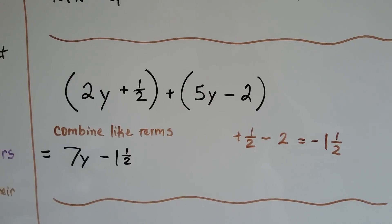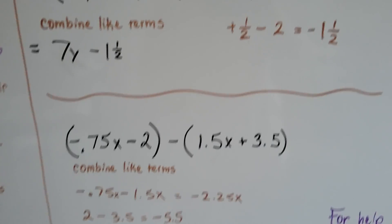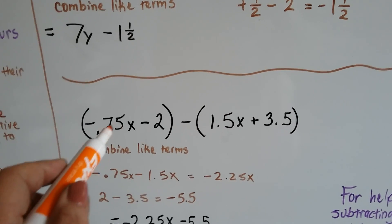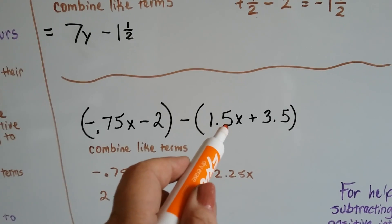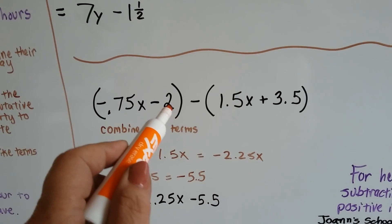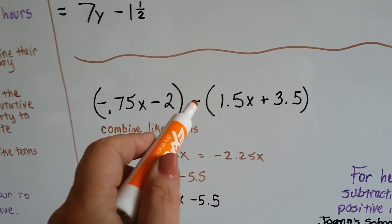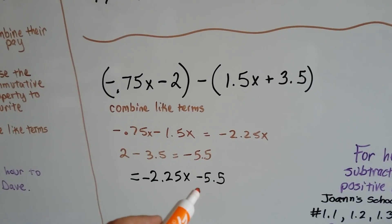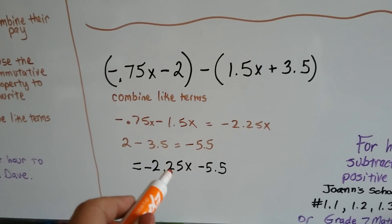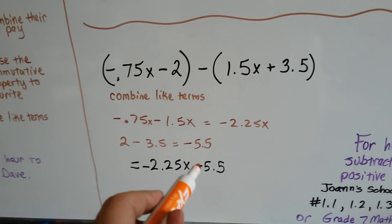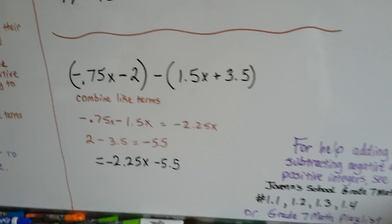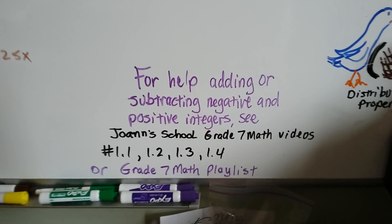One-half minus two gives us negative one and a half. If we have negative 0.75 and we need to take away 1.5x, that's going to be negative 2.25x. Then negative two take away three point five is going to be negative five point five. So the whole expression is rewritten as negative 2.25x minus 5.5, and we've combined all the like terms.